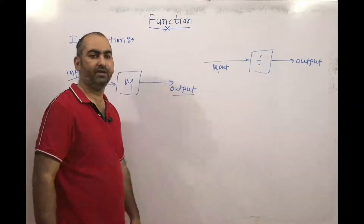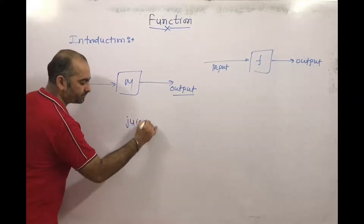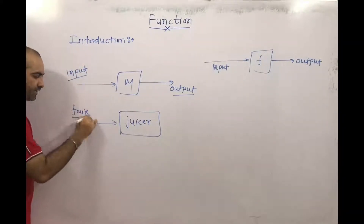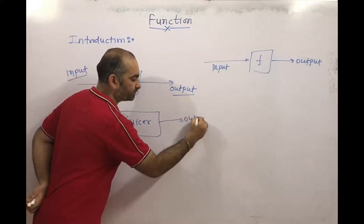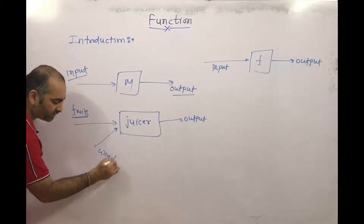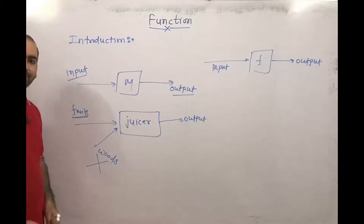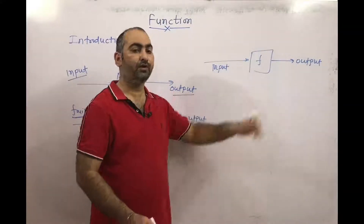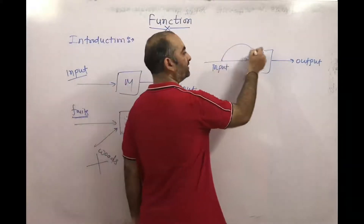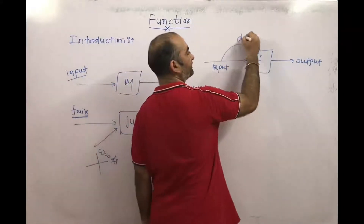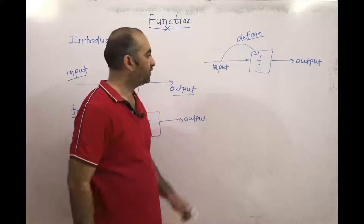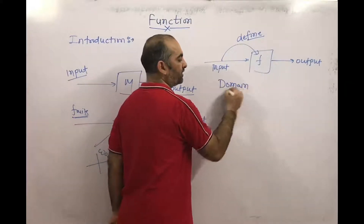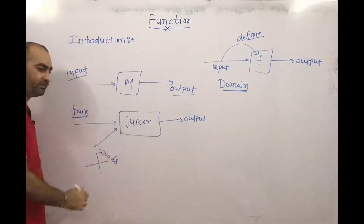But what inputs will be allowed? Suppose a juicer is there. In a juicer, what inputs can we put? We can put fruits. And we will get some output. But can we put wood? No, we can't put wood. That means for this machine, the inputs are fruits only, not wood. Same way for a function also, we can't put just anything — we can only put inputs for which the function is defined. So the input should be defined, and that set of values where the function is defined is called the domain. For a juicer, the domain is fruits, not wood.